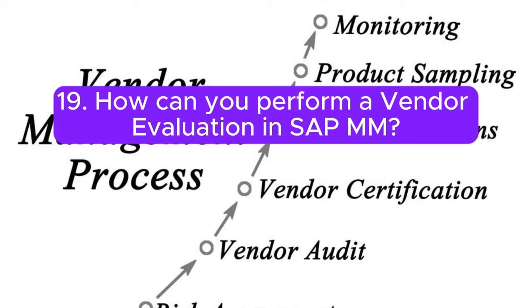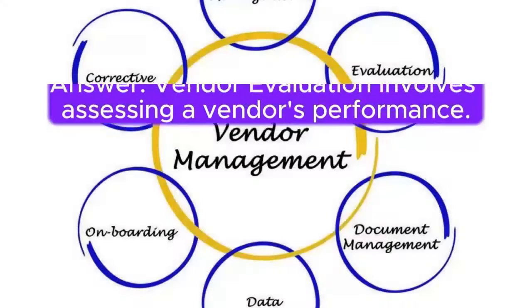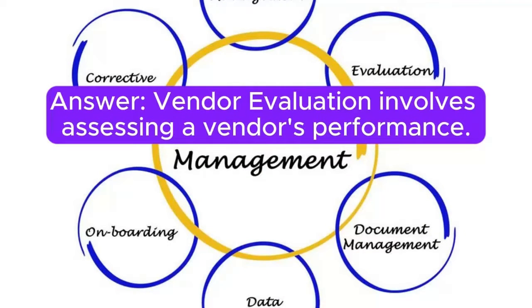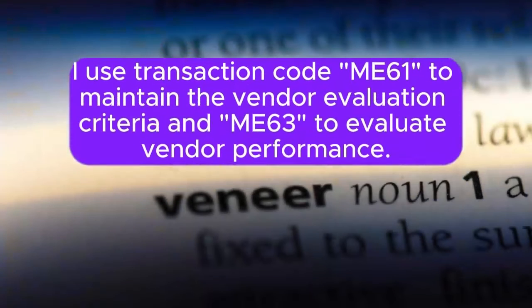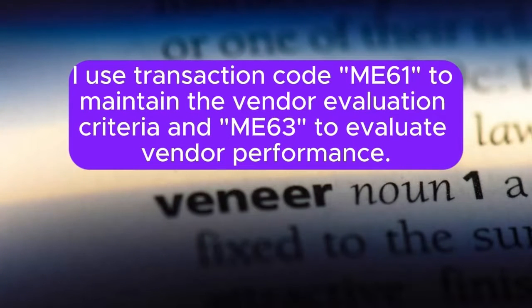Question 19: How can you perform a vendor evaluation in SAP MM? Answer: Vendor evaluation involves assessing a vendor's performance. I use transaction code ME61 to maintain the vendor evaluation criteria, and ME63 to evaluate vendor performance.